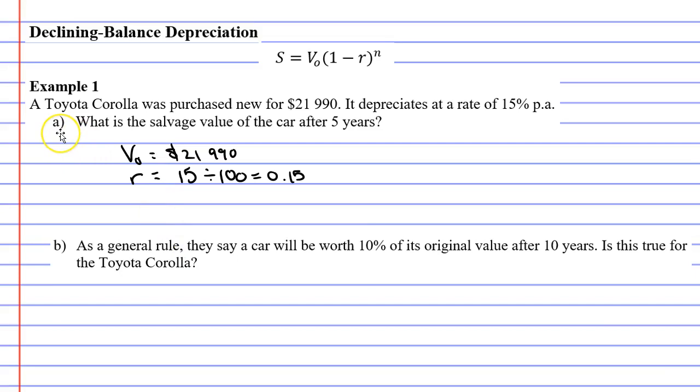Question A is asking you to find the salvage value of the car after five years, meaning that n equals 5. So we're just going to plug this into our formula. S equals, first we see V0, so we need to write down that amount, $21,990. Open up our brackets, 1 minus r this time, not plus. So r being 0.15. And putting this to the power of n, which is five years here.